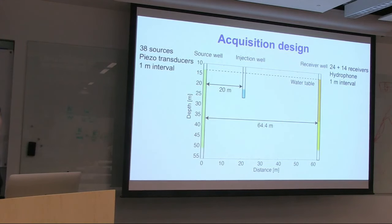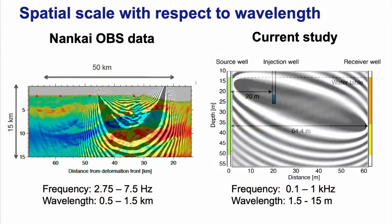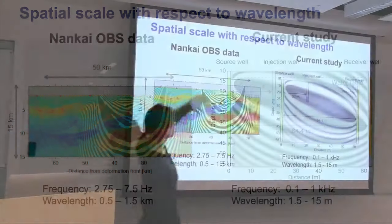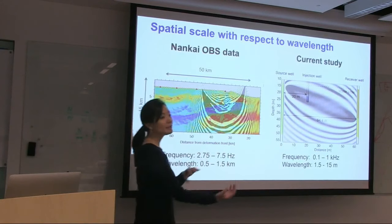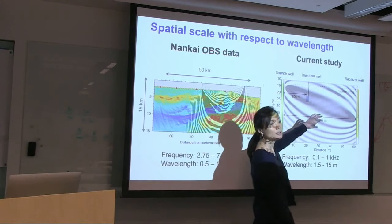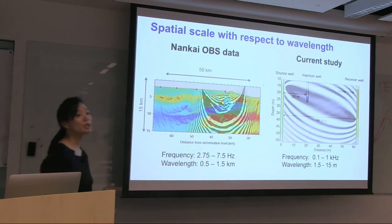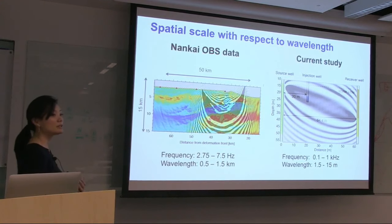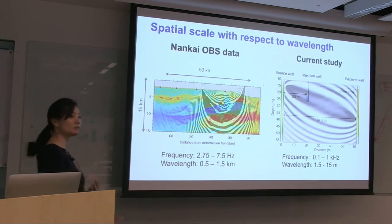This crosswell survey is very different in scale from the Nankai subduction zone survey, but when you look at the sensitivity kernels from the wavelength perspective, they are not that different. The left shows the fat sensitivity kernel for the Nankai data, and the right shows the current study's sensitivity kernel — also fat. Different survey scales, but similar from a wavelength perspective.